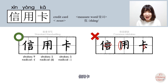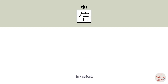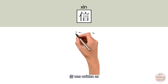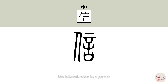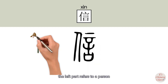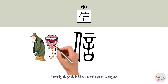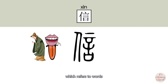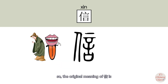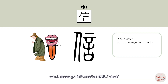信用卡. In ancient script, 信 was written differently. The left part refers to a person, the right part is the mouth and tongue, which refers to words. So the original meaning of 信 is word.